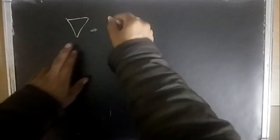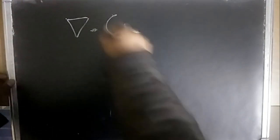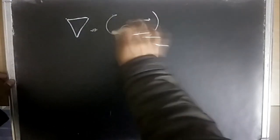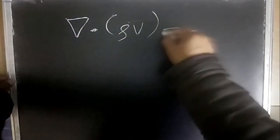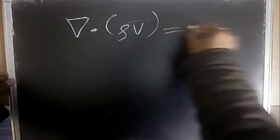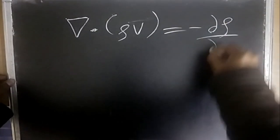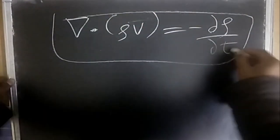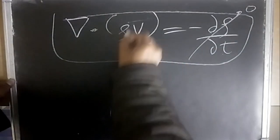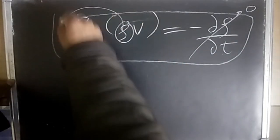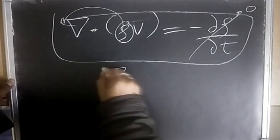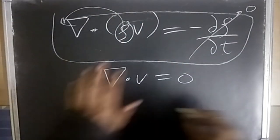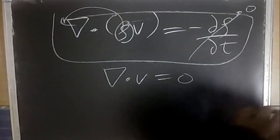Next is the continuity equation, which is very important. It is ∇·(ρv̄) = -∂ρ/∂t. For steady state, the right side is zero. For incompressible flow, ρ comes out, so ultimately ∇·v = 0 for incompressible and steady state.